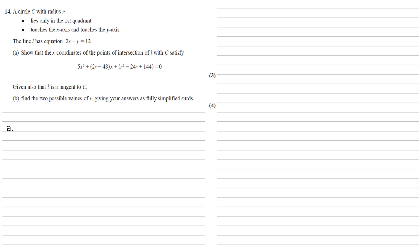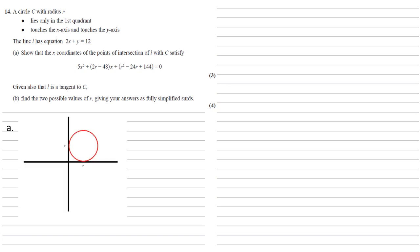Let's think about the circle first. It lies only in the first quadrant and has radius R, and it's touching both axes, so it must look something like this. As it's got that radius R and is just touching the axes, it must have a center at the point RR. So the equation of this circle must be x minus r squared plus y minus r squared equals r squared.